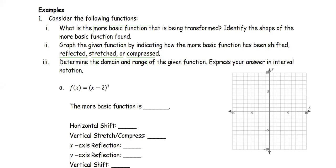In this example, we consider the following functions and look at three parts. Part one: what is the more basic function? Let's name it as the function g that is being transformed, and identify the shape of the more basic function. Next, we're going to graph the given functions by indicating how the more basic function has been shifted, reflected, stretched, and compressed. The last part is to determine the domain and range of the given function, expressed in interval notation.